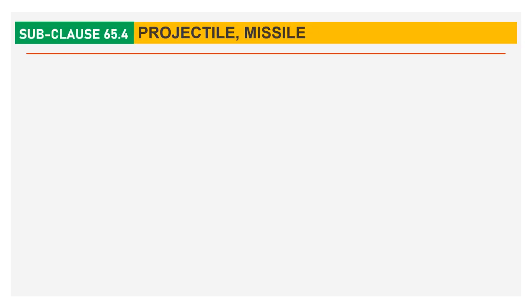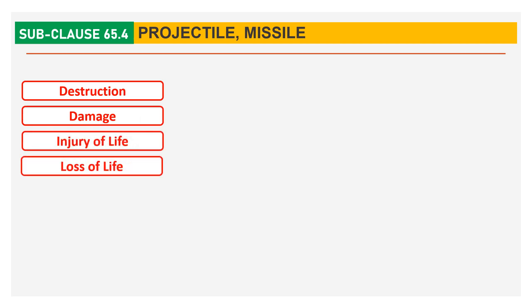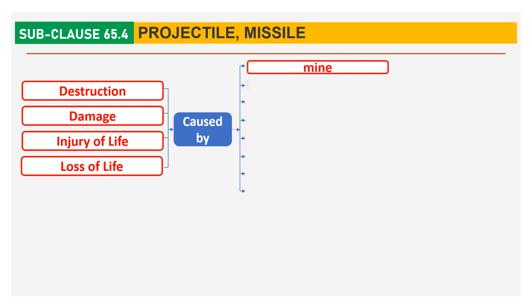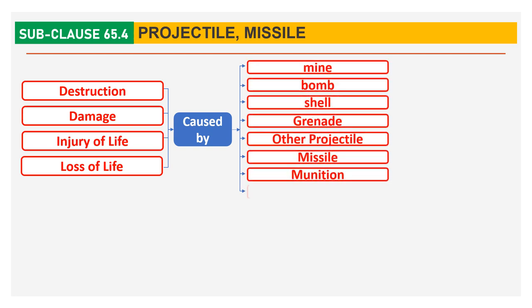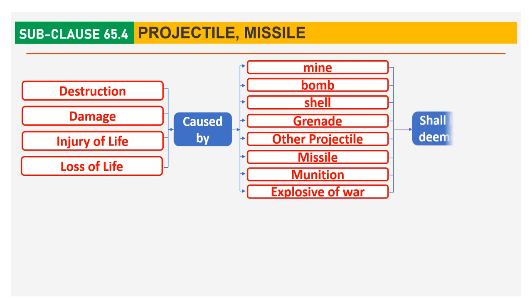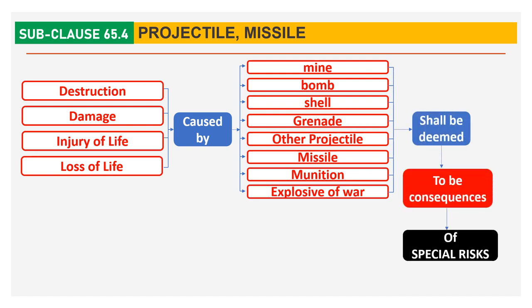Sub-clause 65.4 Projectile and Missile: if destruction, damage, injury or loss of life is caused by a mine, bomb, shell, granite, missile, munition or explosive of war, these shall be deemed to be consequences of Special Risk.